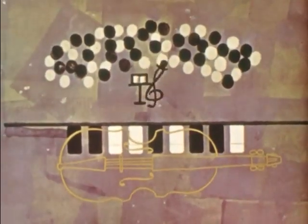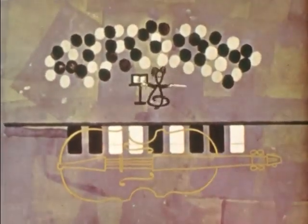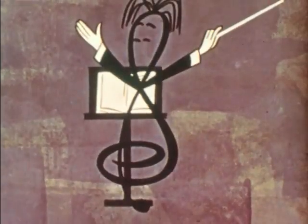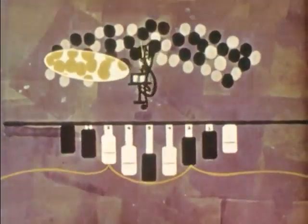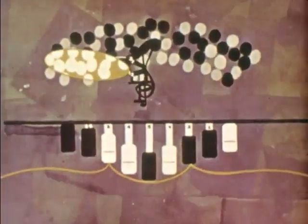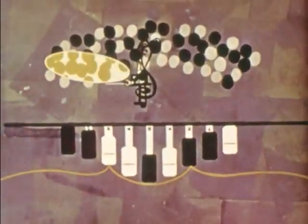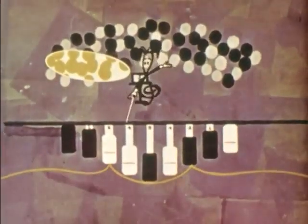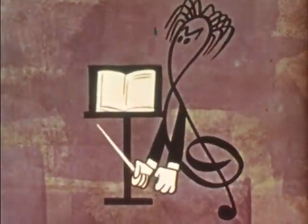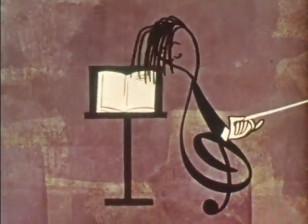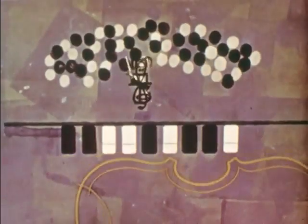Every musician — in fact, just about everybody — would like to have his own orchestra to conduct. Hammond gives the organist the whole orchestra to work with in these tone bars. Let's start with our string section. You can see what the strings look like and vary the harmony and change the tone color according to your taste.